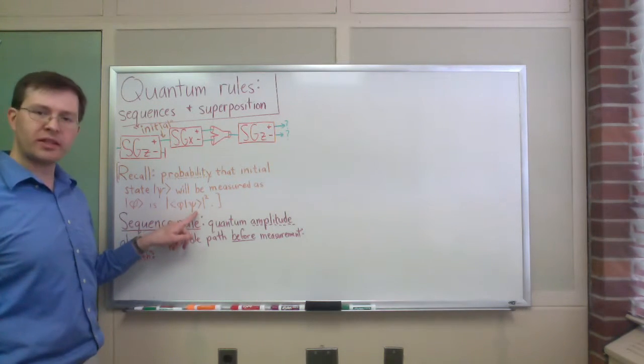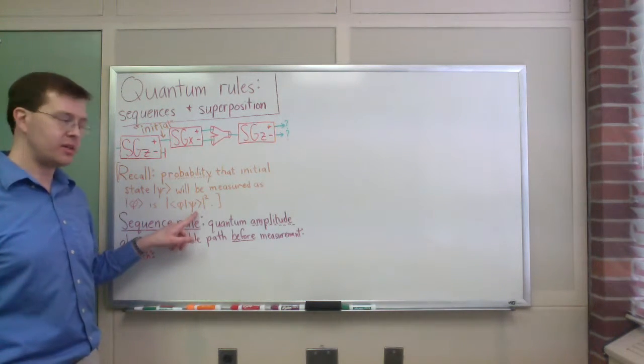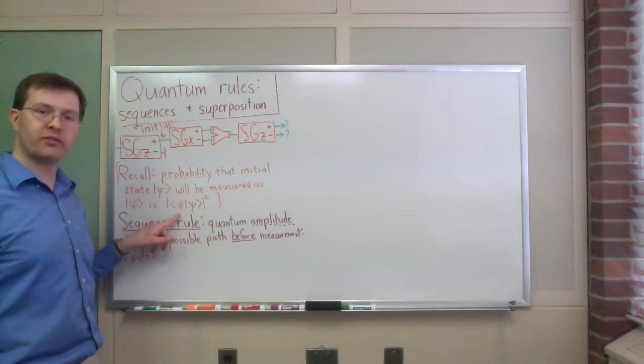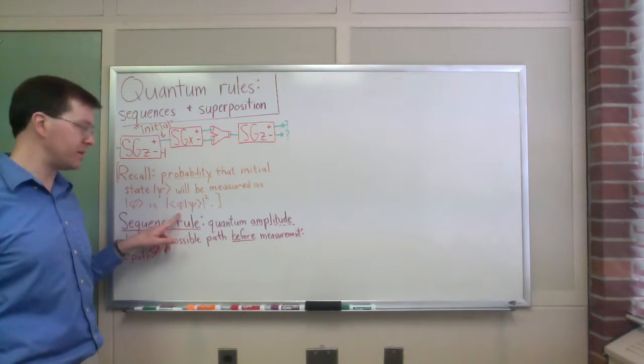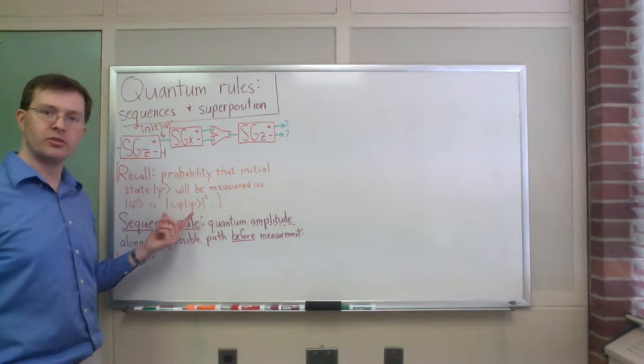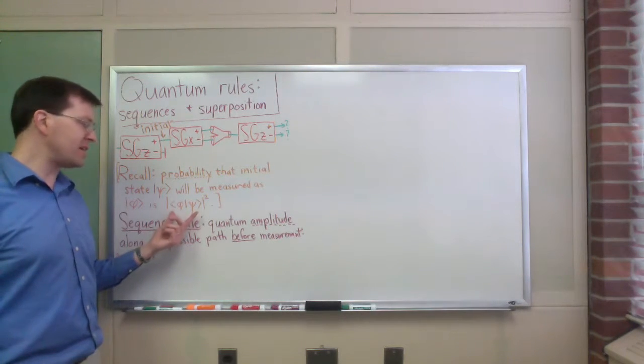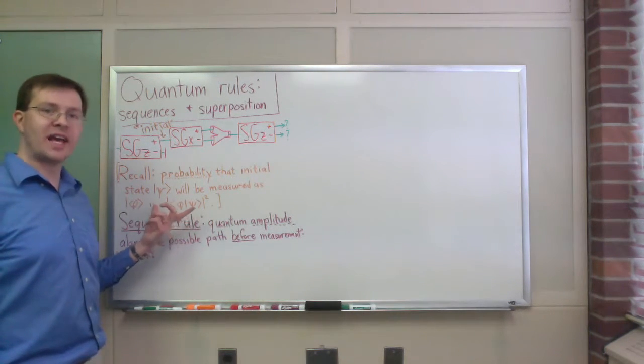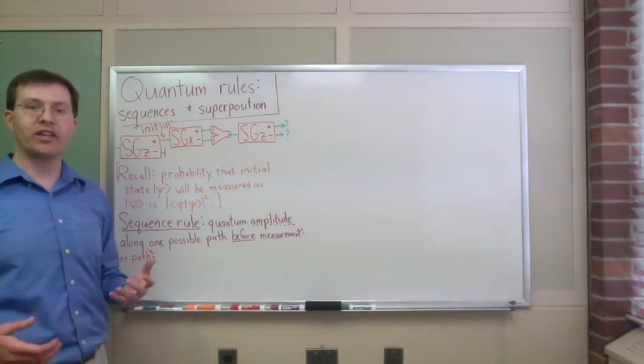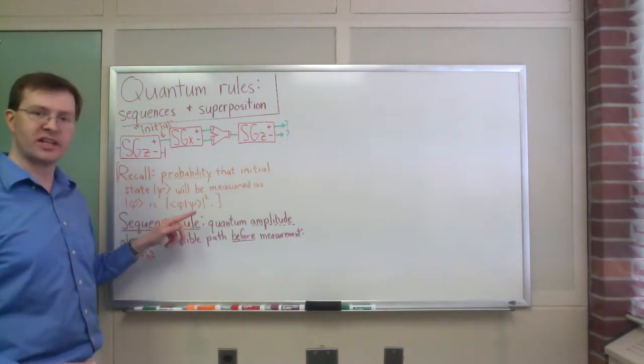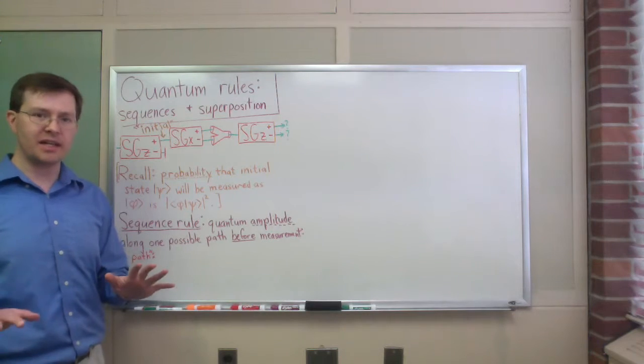what I do, I take my initial ket vector, my initial state vector, and I put the bra version of the measurement state, the final state I'm interested in, take that bracket using our usual rules, and then to do the actual measurement, I find the absolute square of that. And that's how I find the probability of measuring phi if I started in psi. That's the basic idea.